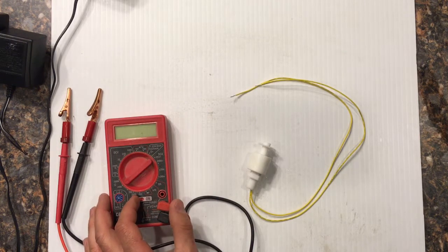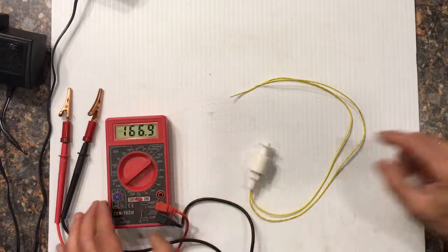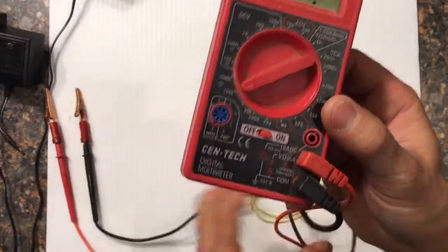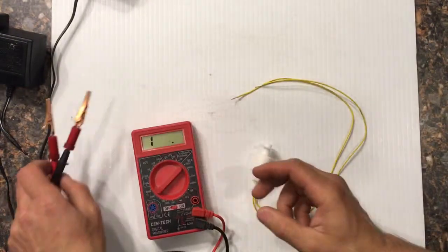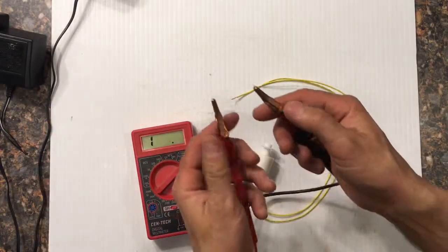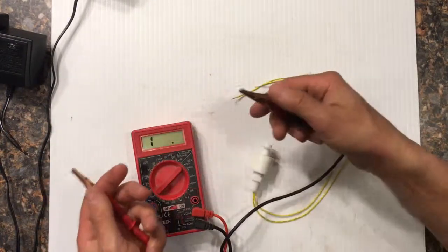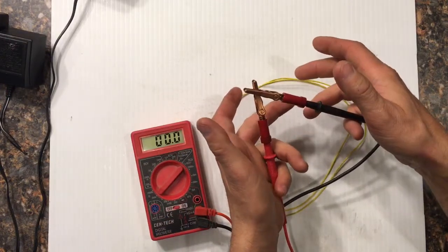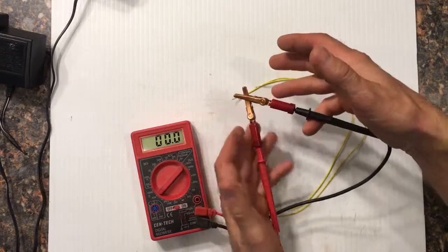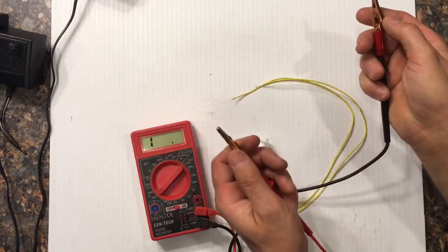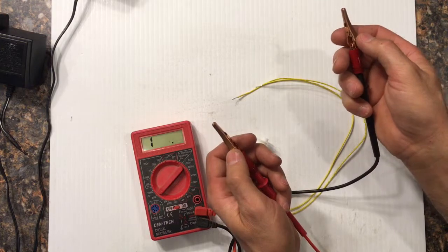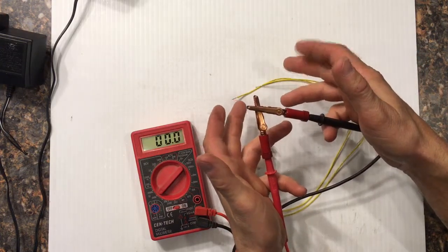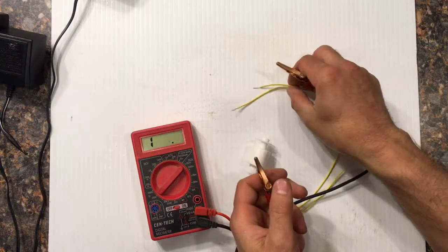Alright, so the first thing we're going to do is we're going to put it on ohms. How we check it, make sure we're getting what we need. We got an open. That one means we're at an open right now. Hook them together, now we got 0.0, so we got a good solid connection there. Electricity is flowing. Open circuit means it's not flowing electricity, closed circuit means it is flowing electricity.